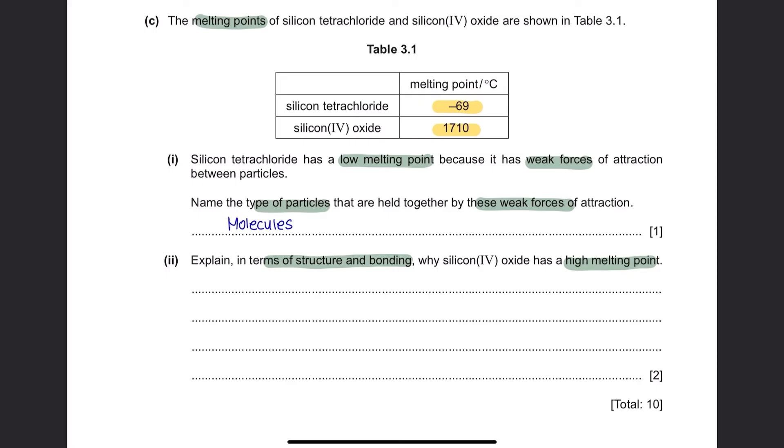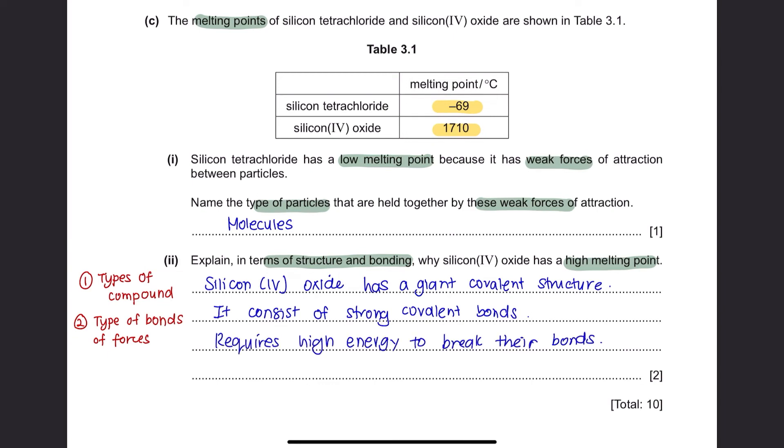Part 2. Explain, in terms of structure and bonding, why silicon oxide has a high melting point. When explaining in terms of structure and bonding, you can start by stating the type of compound it has. Silicon oxide is a giant covalent structure. Next, mention the type of bonds or forces a giant covalent structure has. Hence, it requires a high energy to break the bond between the particles. Since you are only given with 2 marks, the first 2 points are sufficient. You can mention the 3rd point if you are given with 3 marks.